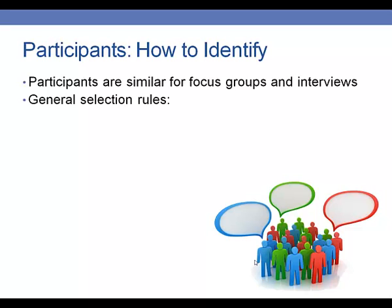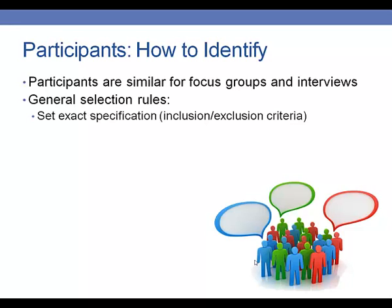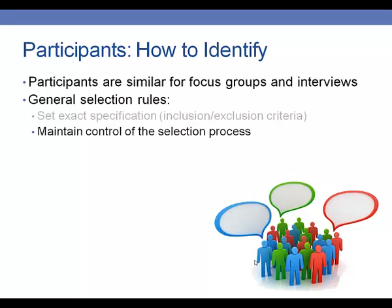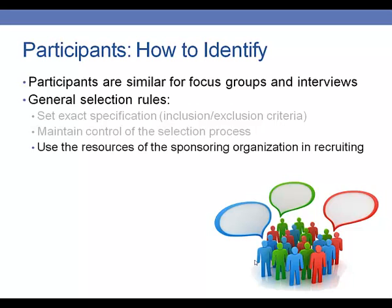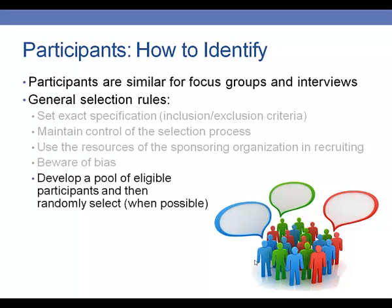How can you identify participants for your focus groups and interviews? One of the first things you'll need to do is set what's called inclusion and exclusion criteria — the criteria that clearly spell out who you want to participate. Is it people who attended a certain number of sessions in your program, or who go to a certain school or live in a certain geographic location? To maintain control of the selection process, use your inclusion and exclusion criteria to guide you. When possible, develop a pool of eligible participants and then randomly select from those people, being aware of bias and avoiding recruiting such a small subset of your target population.